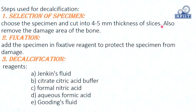The bone is cut into slices. After cutting, also remove the damaged area of the bone. Whatever damaged area is there, we remove it and then do section cutting. First cut the slices, then remove the damaged area.